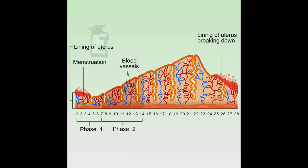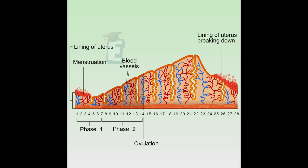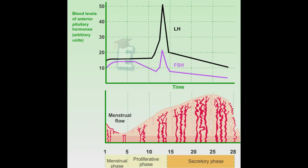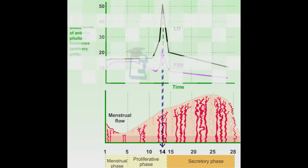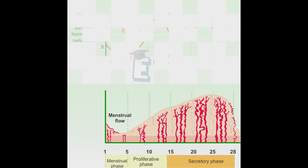During the proliferative phase, estrogen will be produced by the ovary to mature the ovum. Then the uterus will be triggered to produce tissue, so it will begin to become thick. In this phase, FSH and LH levels increase on the 14th day and affect the ovary.